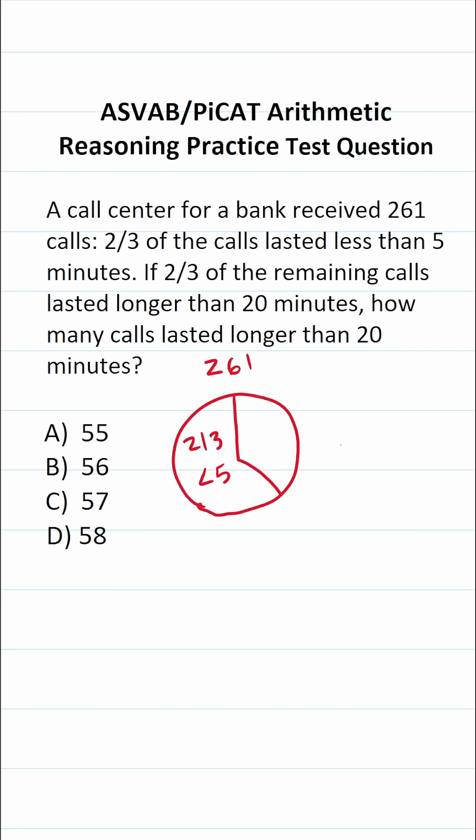That means that one-third of the calls were greater than five minutes in length. So the first thing we have to figure out is what is one-third of 261? So the way I'm going to do that is I'm going to take 261 and multiply it by one-third.